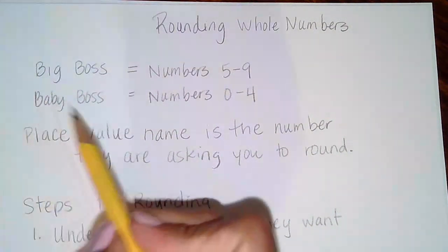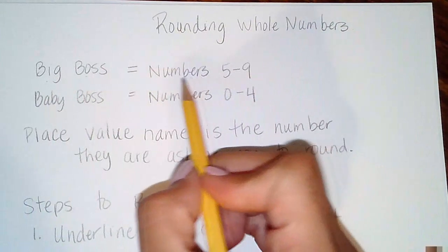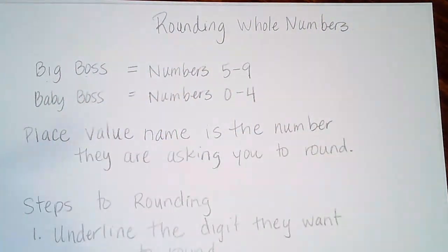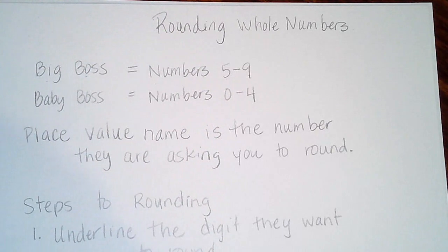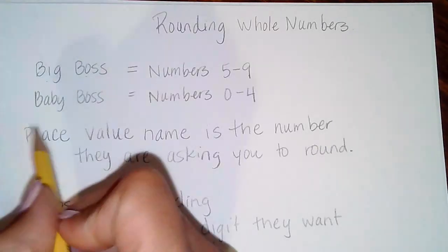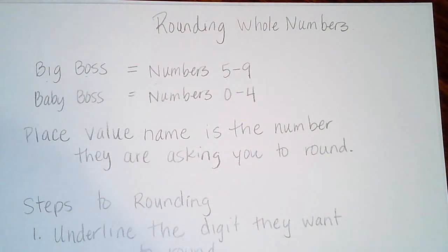I determined I wanted to call big bosses numbers that are five to nine. Big bosses are numbers that can tell you what to do, just like your older siblings or cousins. Baby bosses are numbers that are zero to four, and these are bosses but they can't tell you what to do. The place value name is the number that they are asking you to round.